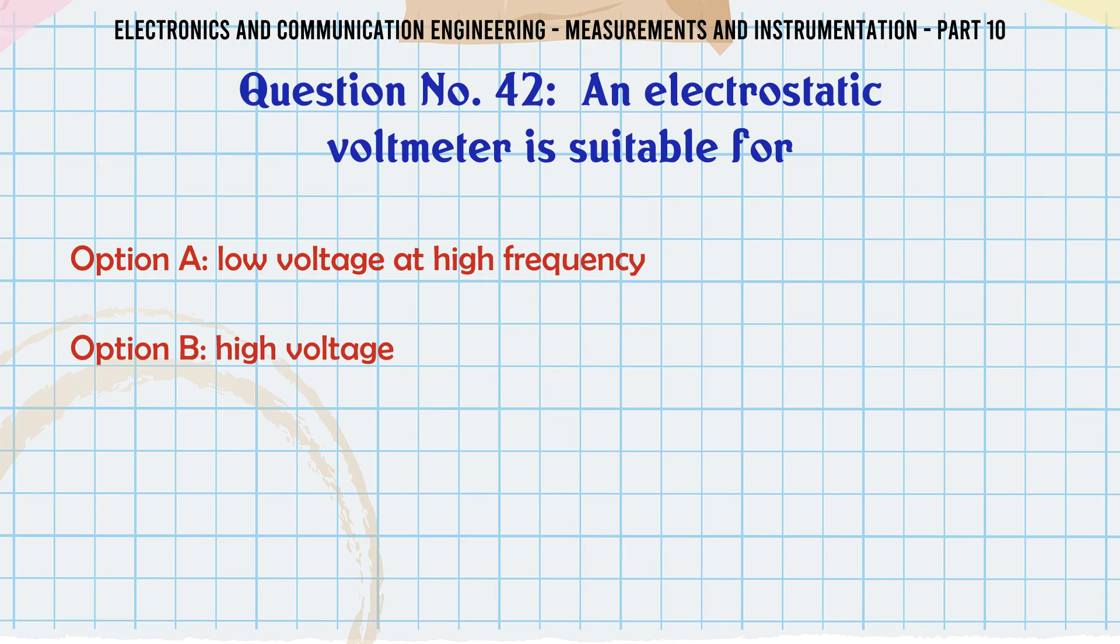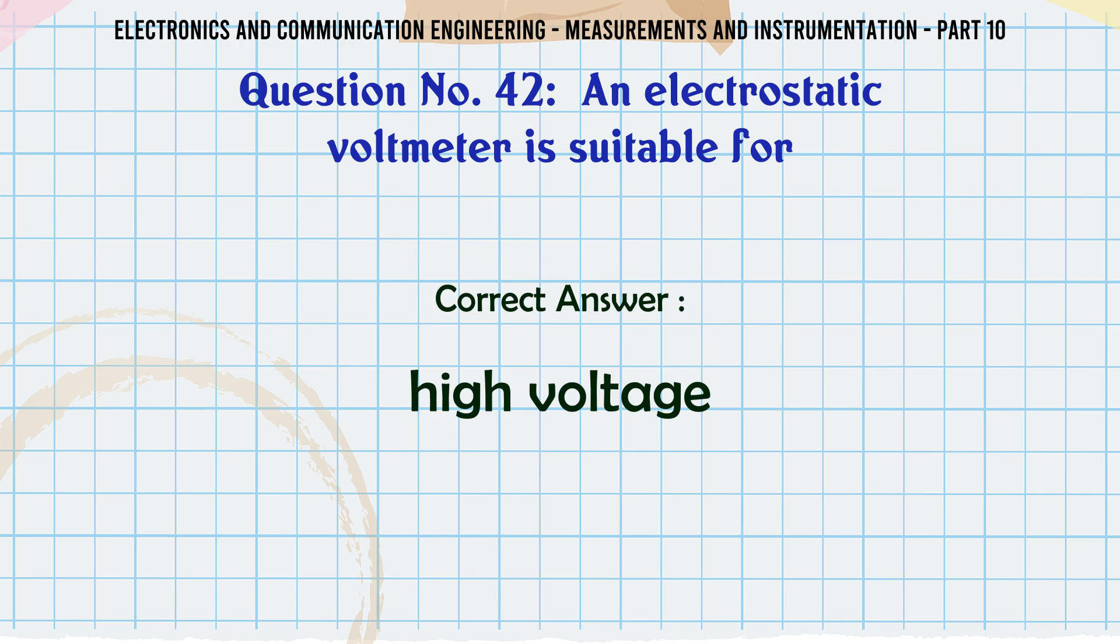An electrostatic voltmeter is suitable for: A) low voltage at high frequency, B) high voltage, C) low voltage at low frequency, D) all AC and DC voltages. The correct answer is high voltage.